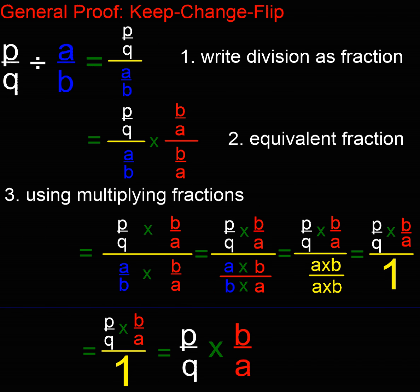And I could do the same thing using letters, couldn't I, to make it more general. P over Q divided by A over B. I could show that division as a fraction. I can then make an equivalent fraction by multiplying by B over A as the reciprocal of A over B.